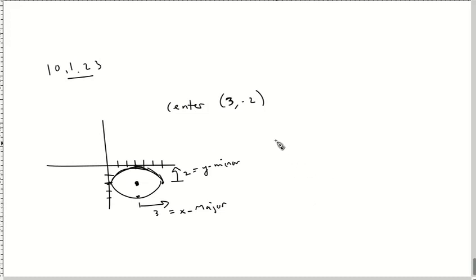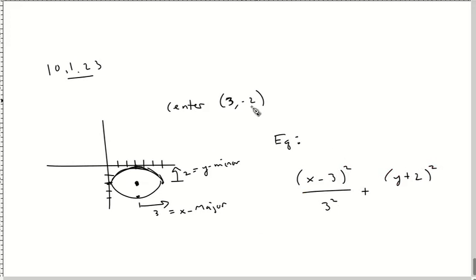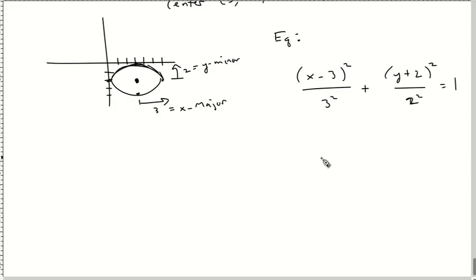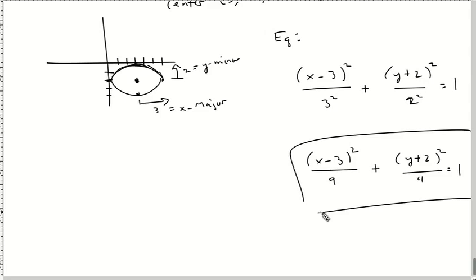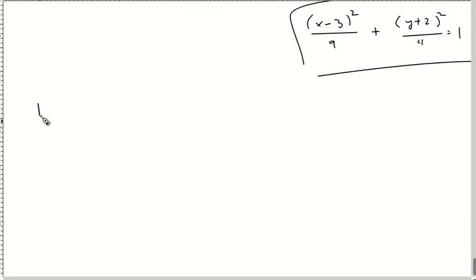We need an equation for this. x minus three, all squared, divided by x major of three squared, plus y plus two — because inside opposites — all over two squared equals one. They want you to simplify the bottoms: three squared is nine, two squared is four. They want you to leave the top unsimplified but simplify the bottom numbers. There are some inconsistencies in what MyMathLab asks you to simplify.